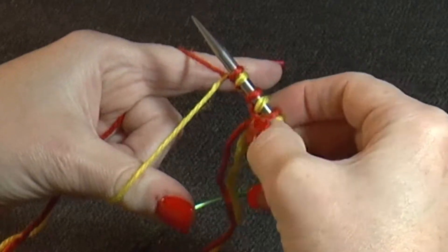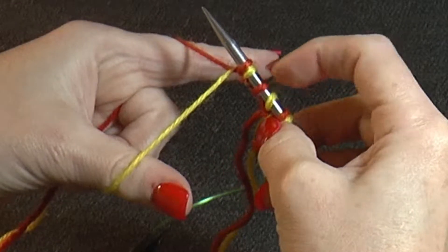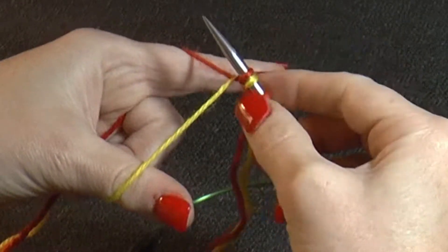So now your first little slipknot, you're going to drop that off the needle. You're not going to use that. These are actually your stitches. So you have four stitches now.